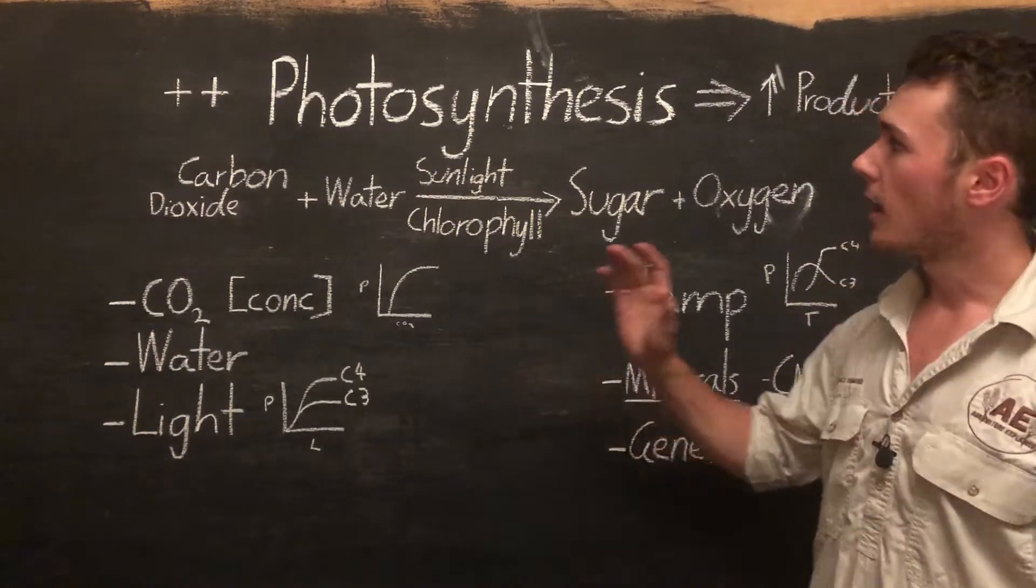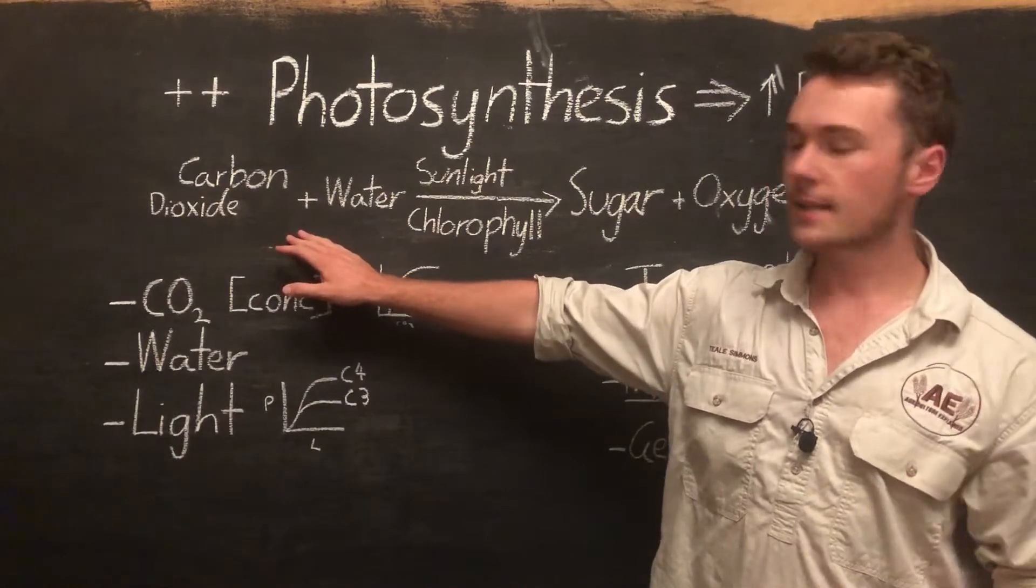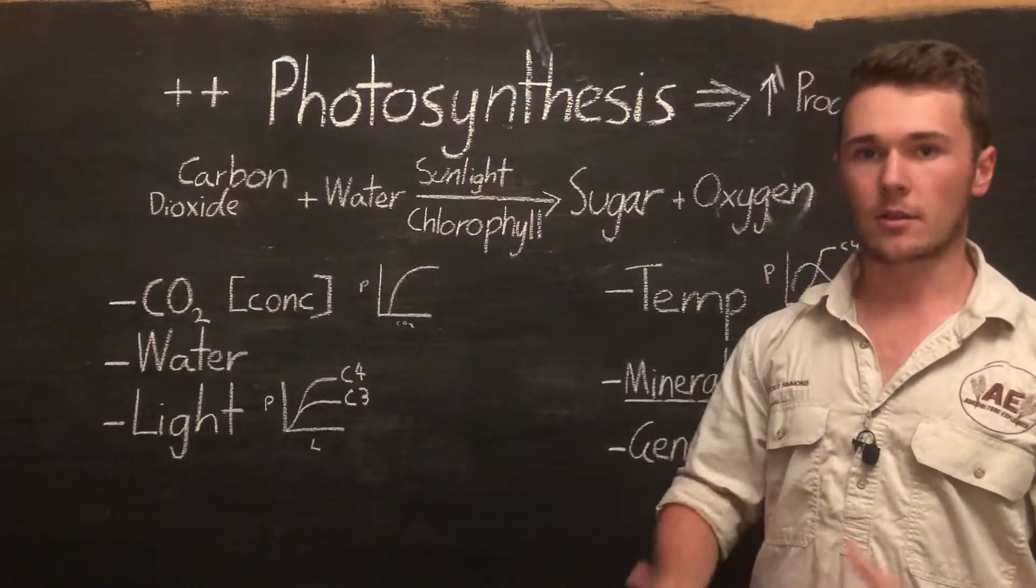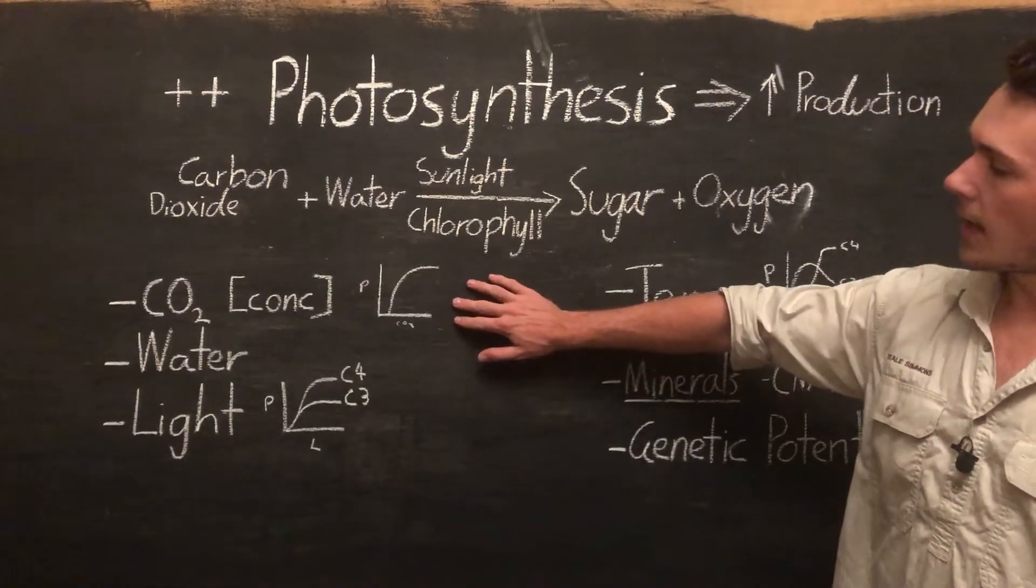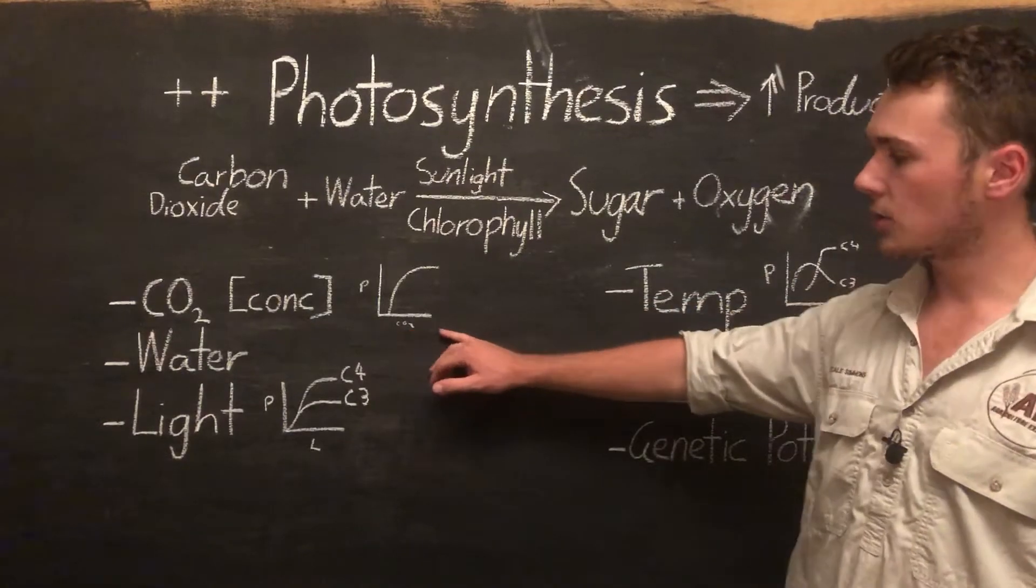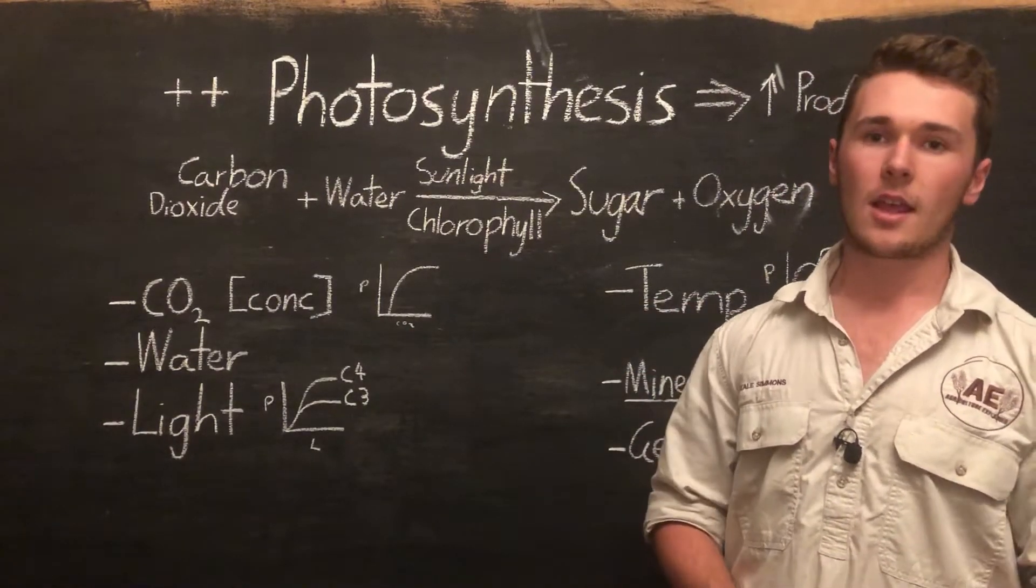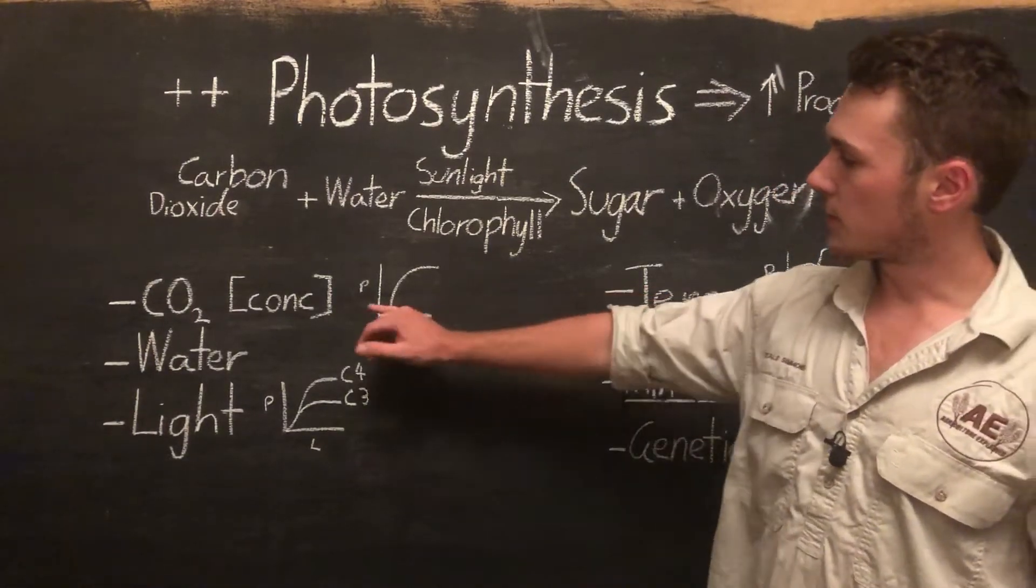Whatever you have the minimum value in, that's going to limit your production. Just like photosynthesis, we're going to need our reactants. So carbon dioxide is needed in a certain amount for the reaction to work. As we can see in this graph here, when we increase carbon dioxide concentration, the rate of photosynthesis increases.